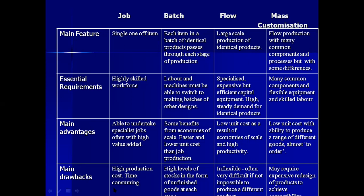Moving on to batch production: the main feature is that each item in a batch of identical products passes through each stage of production. Within a batch, all items are exactly the same — identical. But outside that batch, items are different. All items in the same batch move together from one stage to another; you perform the same task on all items in the batch, then move the whole batch to the next stage.